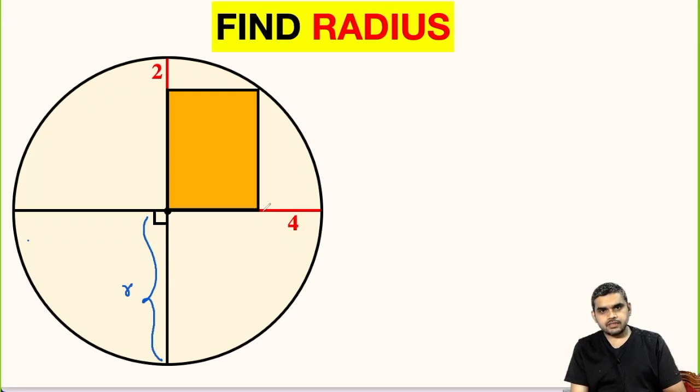This distance is 4 units, so this distance will be r minus 4. Also, this distance is 2 units, so this will be r minus 2 units.